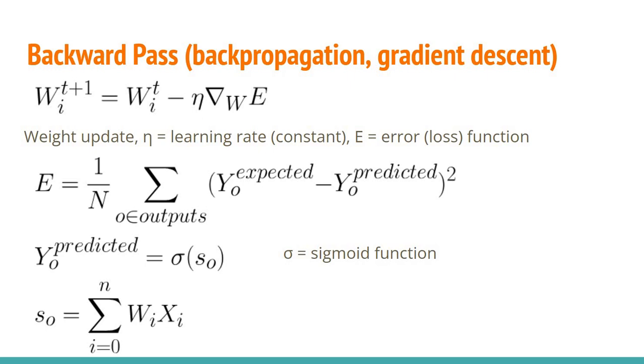The weights at time t+1 are based on the weights at time t minus the learning rate times the gradient based on the error function. So in this equation, eta is the learning rate, which is a constant and we have the error function that I've already discussed.